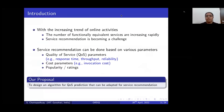With the increasing trend of online activities, the number of functionally equivalent services is increasing rapidly, and therefore choosing a particular option is getting very difficult and service recommendation is becoming a challenge. Service recommendation has to be based on certain parameters, for example, quality of service parameters such as response time, throughput, and reliability, as well as cost parameters like invocation cost or service cost, or popularity-based parameters like rating or feedback.